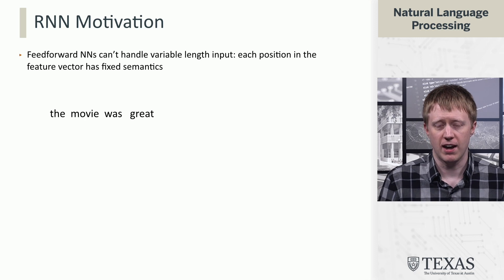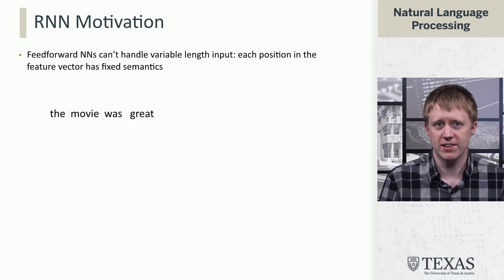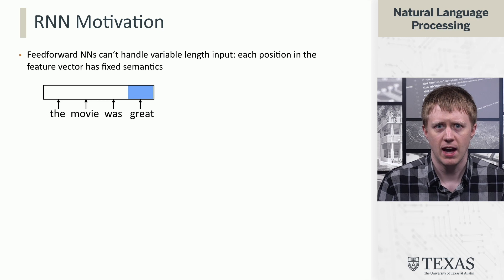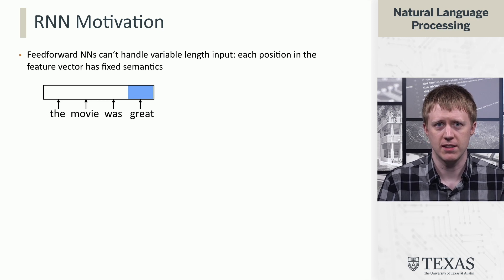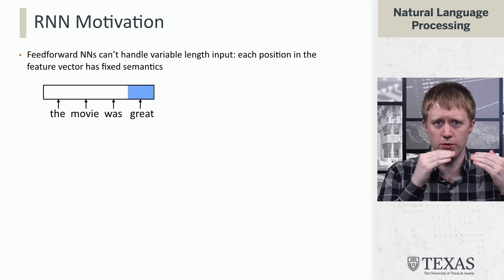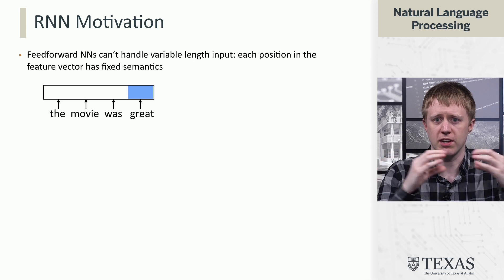Feedforward neural networks, as we've seen, don't do a good job of handling variable length inputs. There are some reasons that are purely practical, but a conceptual one is that they assign each position in their feature vectors fixed semantics. So suppose we take four words, 'the movie was great,' and we concatenate those four word embeddings into a single feature vector.